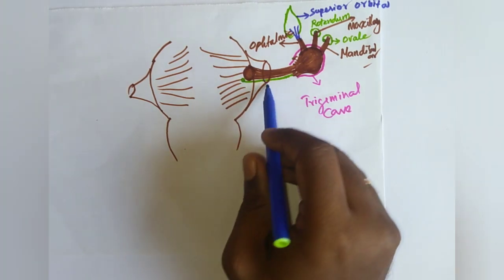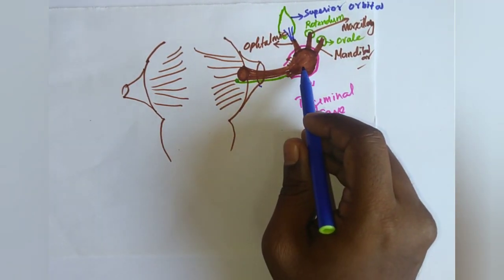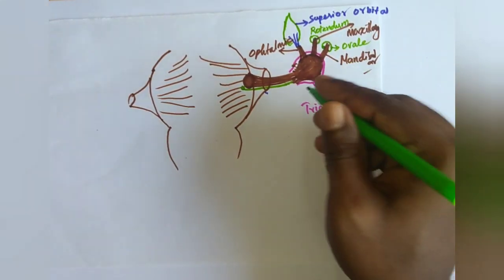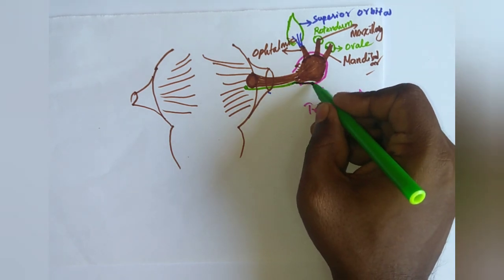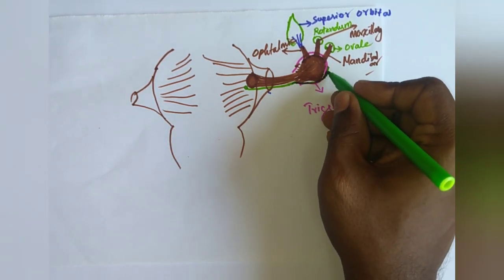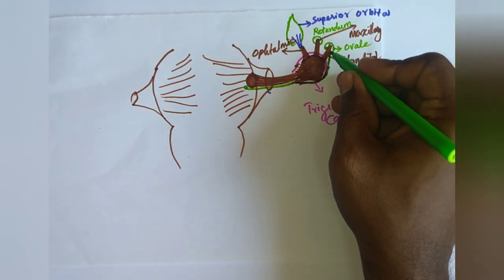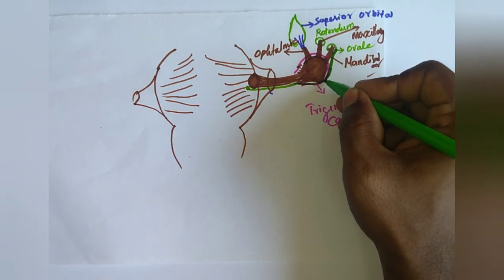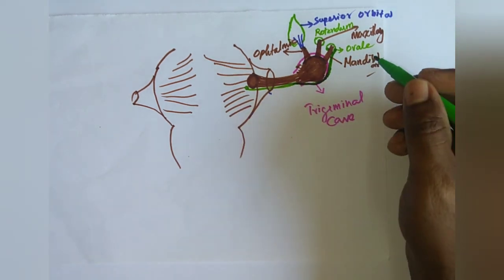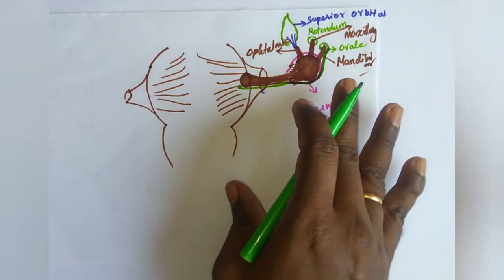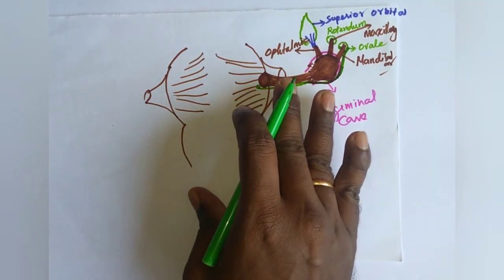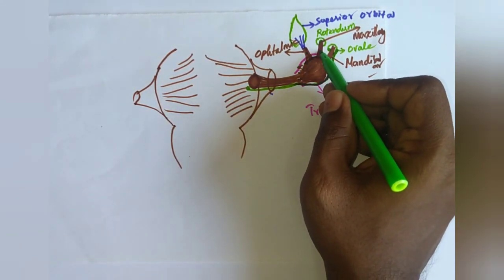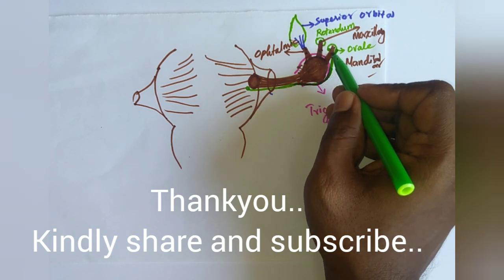This is the introduction about the trigeminal nerve, its main trunk, and the formation of the trigeminal ganglia. The motor component does not relay in the ganglia but goes as a separate branch accompanying the mandibular nerve. So the mandibular nerve carries the motor root. In consecutive videos we will study the individual divisions of the trigeminal nerve in detail.